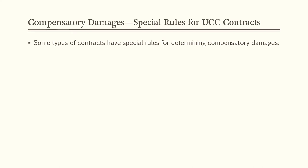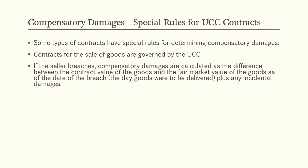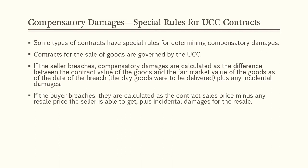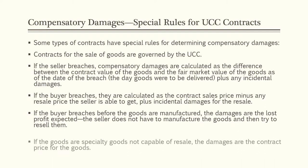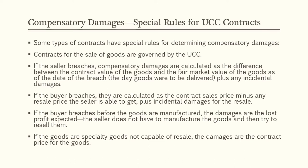Some contracts have special rules for compensatory damages. Under the UCC for sale of goods, if the seller breaches, damages are the difference between the contract value and fair market value of the goods as of the date of breach, plus incidental damages. If the buyer breaches, damages are the contract sales price minus any resale price the seller obtains, plus incidental damages. If the buyer breaches before goods are manufactured, damages are the lost profit expected. If goods are specialty items incapable of resale, like monogrammed shirts, damages are the full contract price.